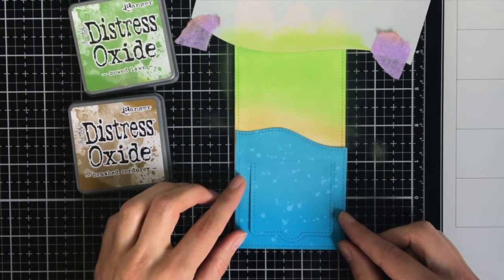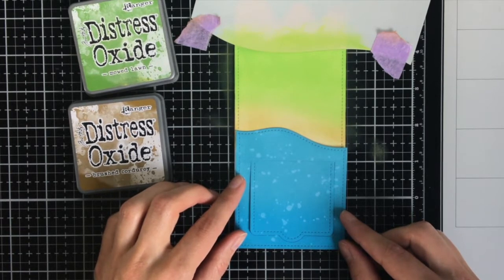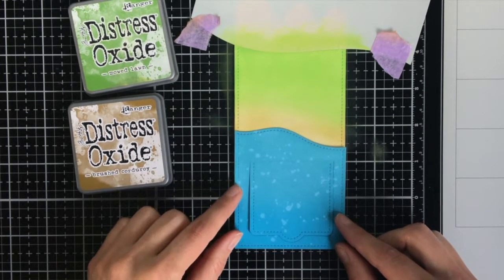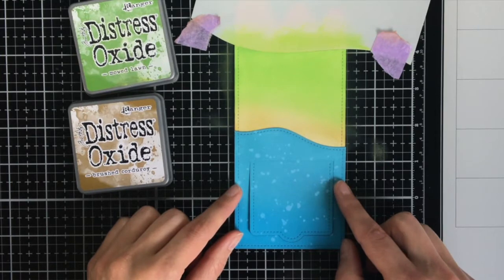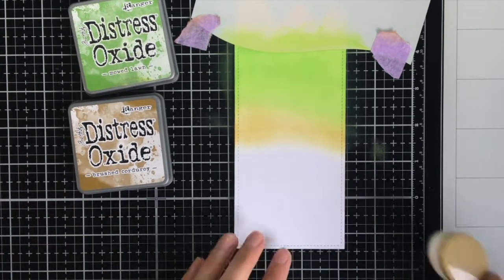For the ink blending of the grass I went over into the brown, so into the Brushed Corduroy, because I thought it would look nice to have this little brown area around the pond.